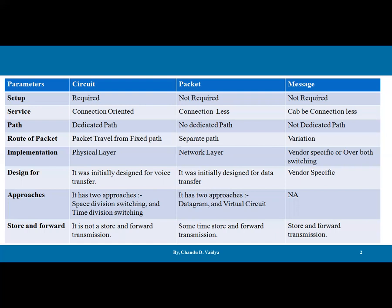Next, service oriented: circuit switching is a connection-oriented service. Packet switching is connectionless, and message switching can also be connectionless. Regarding the path: in circuit switching, there is a dedicated path available. In packet switching, there is no dedicated path — many packets can travel from any place. In message switching, no dedicated path is available either.